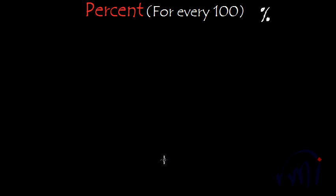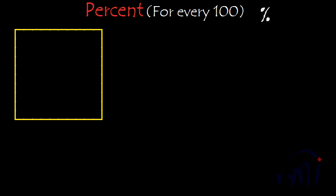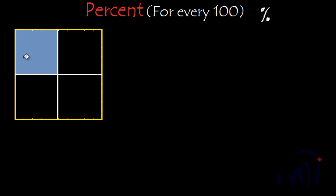Suppose you have a chocolate and you want to eat one-fourth of it. I'll divide this chocolate into four equal parts. Suppose you want one part of it — let me color it in blue. How do we usually write this in fractions? This part will be written as one by four — you want one-fourth of the whole chocolate. So this is how you write in fractions.